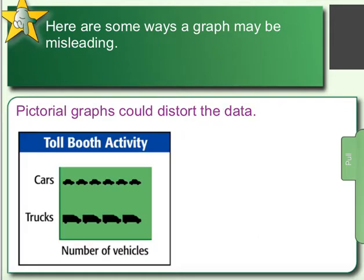Pictorial graphs can distort data. Looking at this, it looks like the same number of cars and trucks went through the toll booth. But in reality, let's count: we have 6 cars to 4 trucks. If we had all these icons the same size, we would see that more cars go through the toll booth.